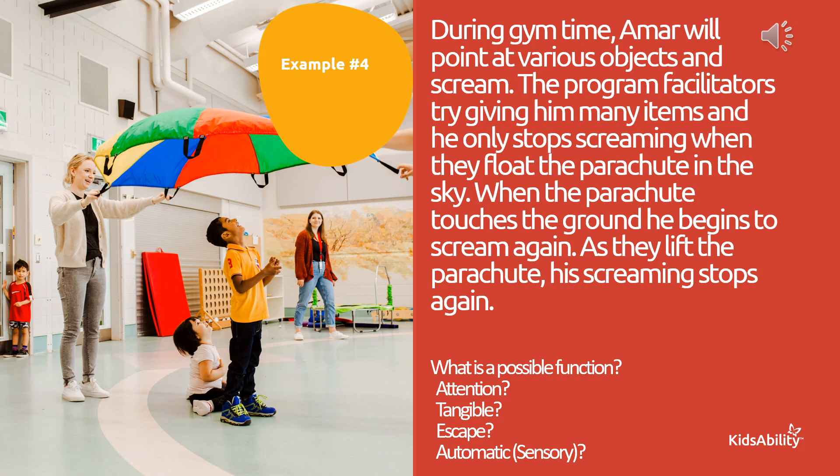In our final example, Amar is pointing at various objects and screaming during gym class. His facilitators try to give him many items, and he only stops screaming when they float the parachute up in the sky. When the parachute touches the ground, he begins to scream again, and as they lift the parachute up, his screaming stops. Amar clearly wants the parachute, which would be a tangible function. Some may also hypothesize that this might be automatic or sensory — that Amar likes the way the parachute looks in the sky. It could also be multifunctional, maintained by both wanting the parachute and a sensory feeling of liking the look.